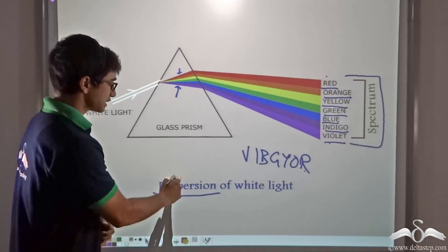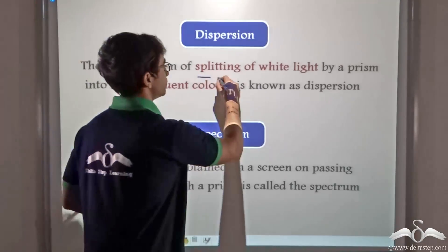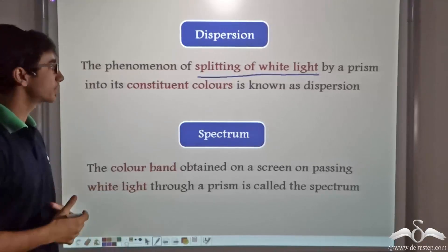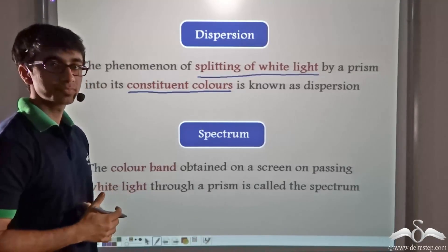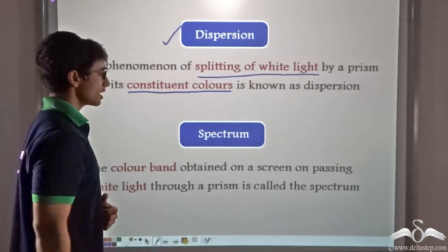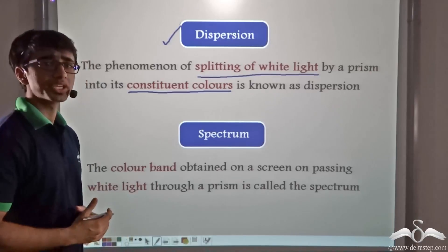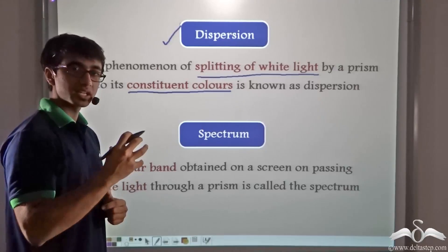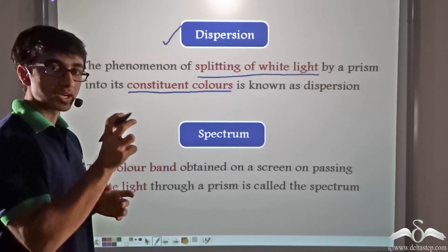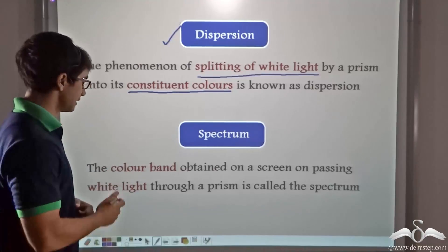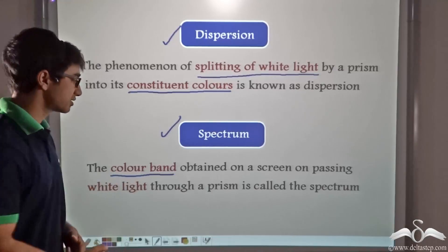How do we technically define dispersion and spectrum? Dispersion of white light is the phenomenon of splitting white light by a prism into its constituent colors. The color band obtained on a screen when white light passes through a prism is known as the spectrum. The seven constituent colors of white light that form this band are the spectrum of white light, obtained after white light passes through a prism.